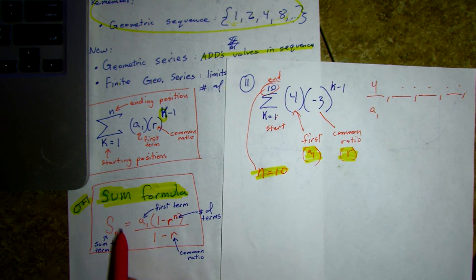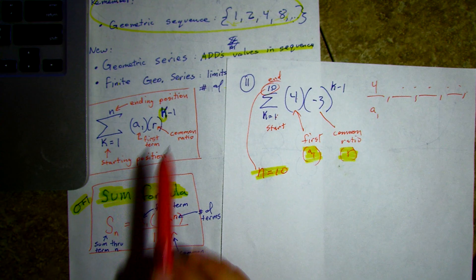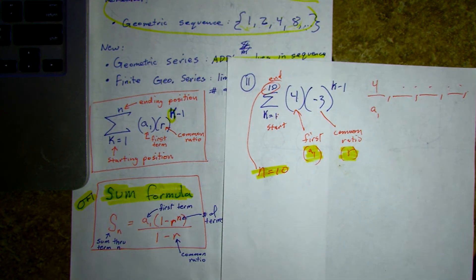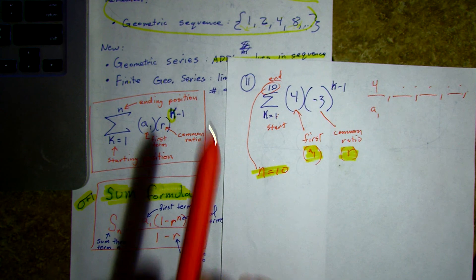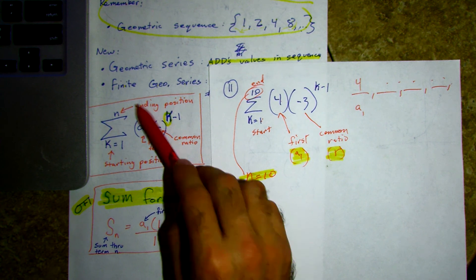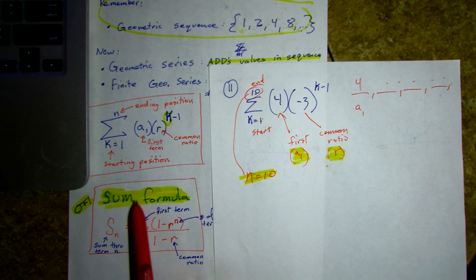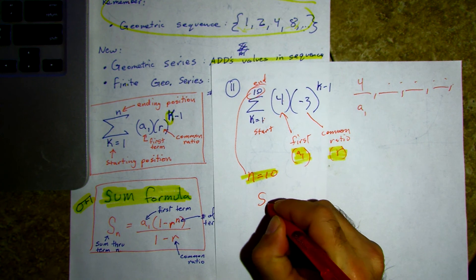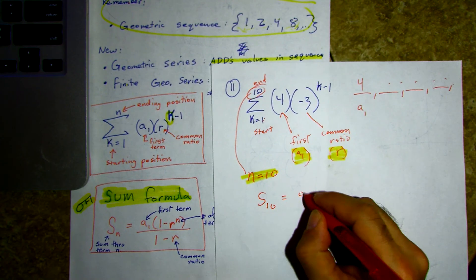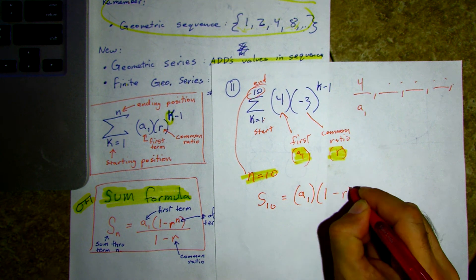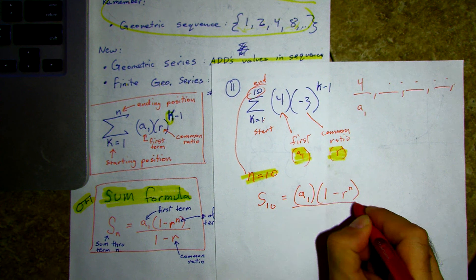Once we know all those bits, we're ready to put them into the formula. It's like interpreting — just like different languages have different ways to conjugate verbs, think of this as one language: we pull out the information we know and interpret it into the sum formula. So: S sub 10 equals a sub 1 times (1 minus r to the n) over (1 minus r).